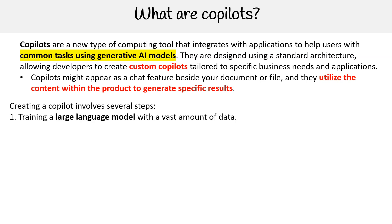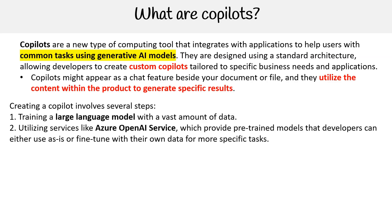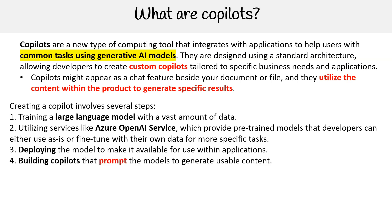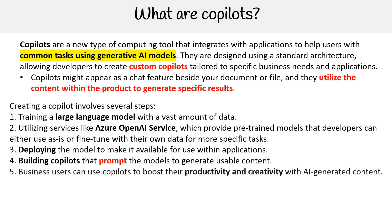Creating a copilot involves several steps: training a large language model with a vast amount of data, utilizing services like Azure OpenAI Service which provide pre-trained models that developers can either use as-is or fine-tune with their own data for more specific tasks, deploying the model to make it available for use within applications, and building copilots that prompt the models to generate usable content, enabling business users to enhance their productivity and creativity through AI-generated assistance.